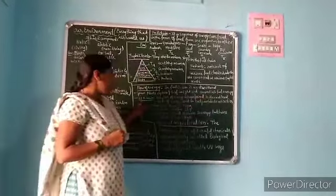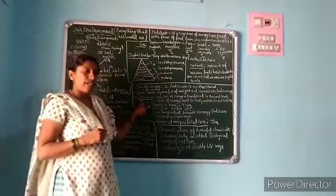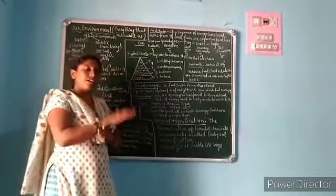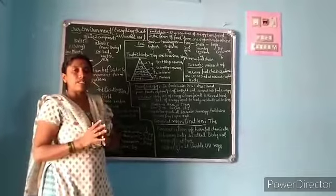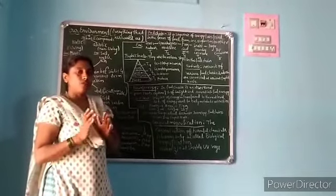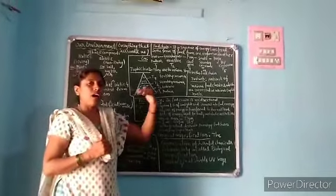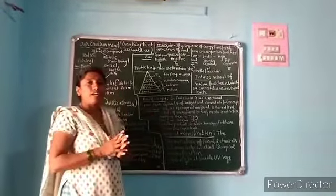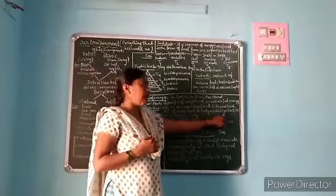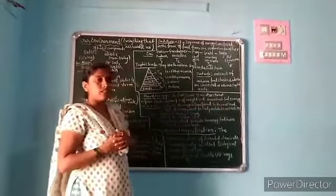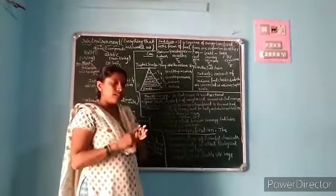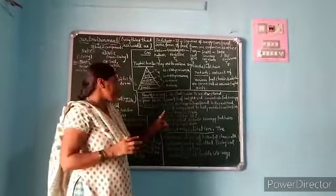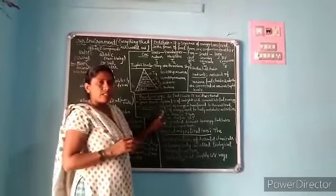And the 10% law: the energy transferred from one organism to another — only 10% of the energy flows from one trophic level to the next. For example, 90% of the energy is used for metabolic activities such as digestion, respiration, and excretion.